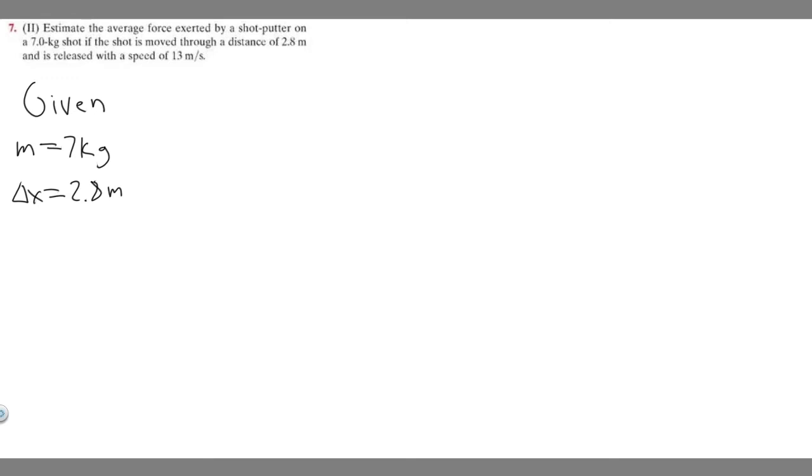And then it tells us it's released with a speed of 13 meters per second. So v sub 0 is going to be equal to 13 meters per second. So this is going to be our initial velocity. What we also know is that v is going to be 0. The reason v is 0 is because it's going to be coming to a stop eventually. So v is going to be equal to 0 meters per second.